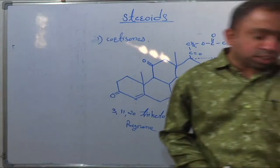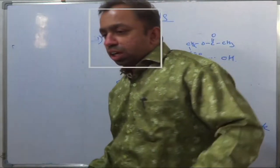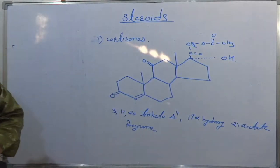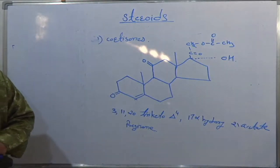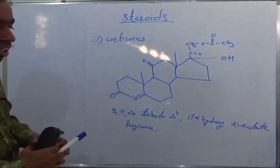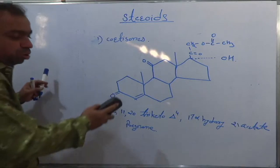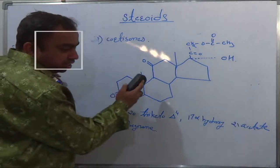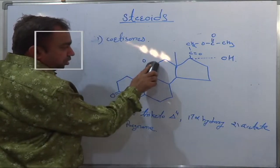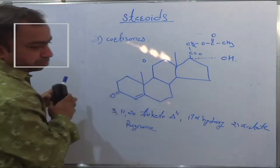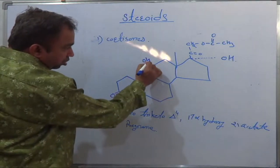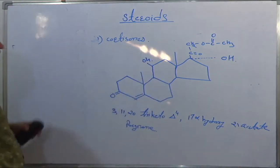We will tell the structure of cortisone and hydrocortisone. The only difference between cortisone and hydrocortisone is the OH group at the 11th position.